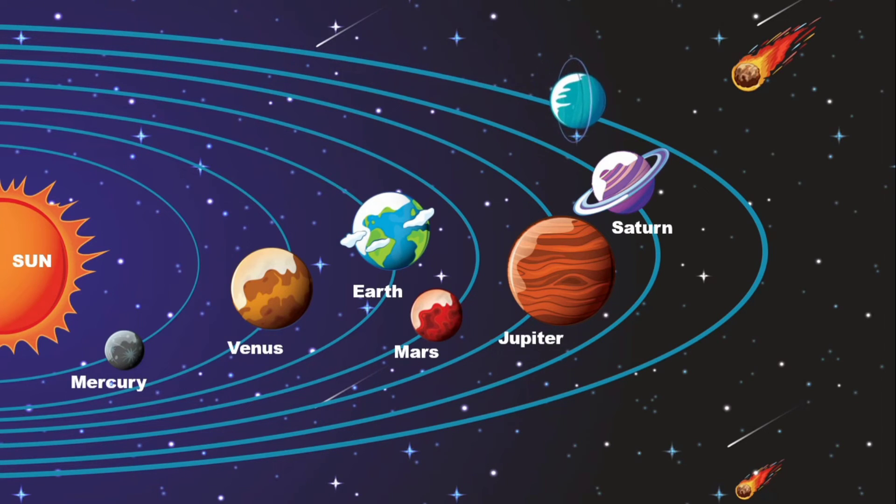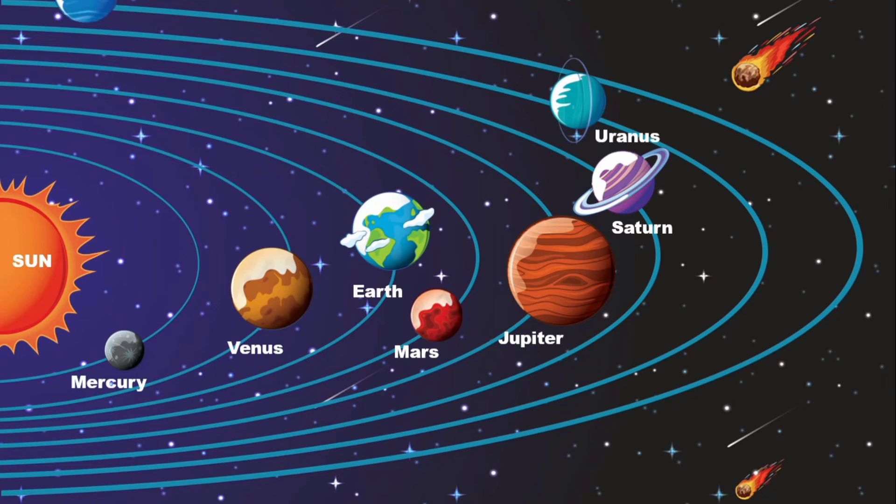Uranus, only planet that spins on its side. Neptune, this is the most distant planet from the sun. It is blue in color.